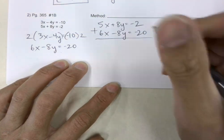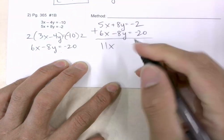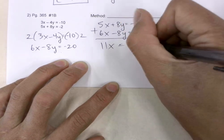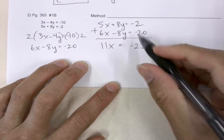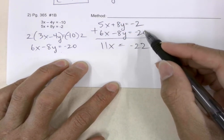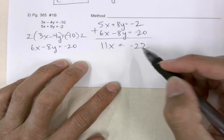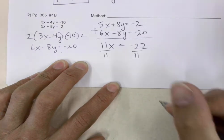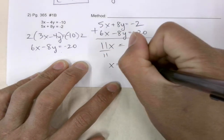5x plus 6x is 11x. 8y minus 8y is 0. That equals negative 22, because the signs are the same, so we add them and keep the sign. I'm going to divide by the coefficient in front of the x, and that leaves me with x equals negative 2.